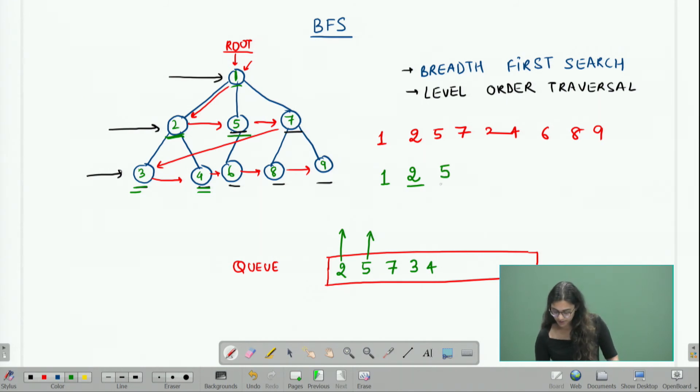When I explore 5, I can print it and what I can do next is look at its children which I have to explore later and push them in the queue. So 6 goes right here into the queue.